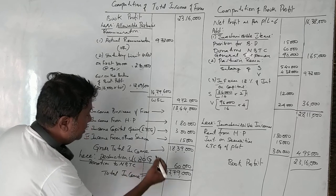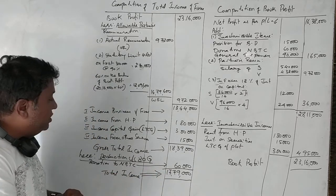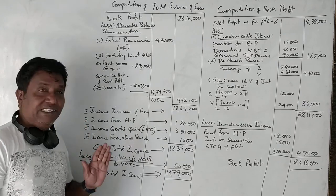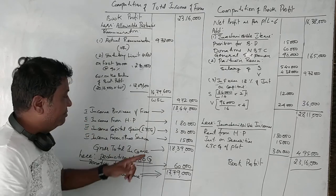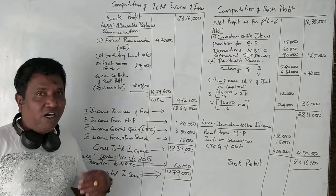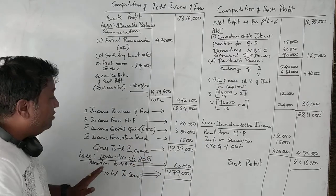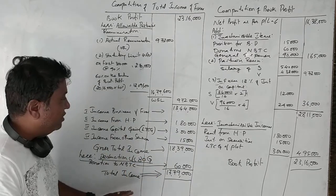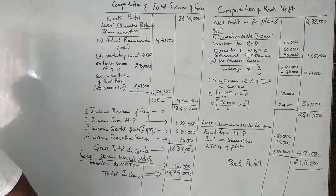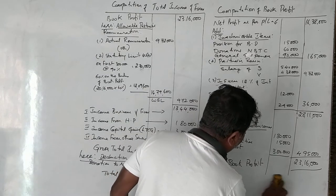Donations to National Blood Transfusion Council get a 100% deduction from gross total income with no limit of 50% or 10% of gross total income — such limits do not apply here. This completes the second step of calculating the total income of the firm.